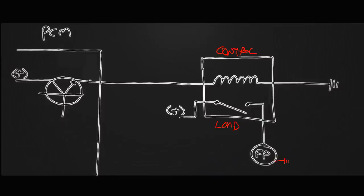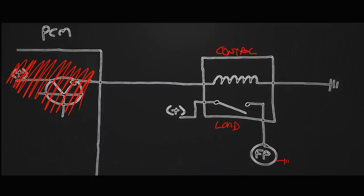I want to focus on the control side. What type of driver is this? Is the computer switching the power or is it switching the ground? It's switching the power. A lot of our diagrams will only give you that - the only designation inside the computer on a wiring diagram might say FP control, or maybe something cryptic like FPCN. So what told you that? If that information wasn't there, how would you know?